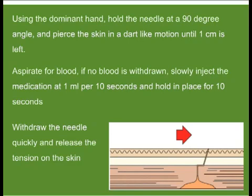Using the dominant hand, hold the needle at a 90-degree angle and pierce the skin in a dart-like motion until 1 centimetre of the needle is left exposed. Aspirate for blood. If no blood is seen, slowly inject the medication at 1 mL per 10 seconds. If blood is seen, do not inject — withdraw the needle and start again with new equipment. Once the medication has been injected, withdraw the needle and quickly release the tension on the skin, sealing in the medication.